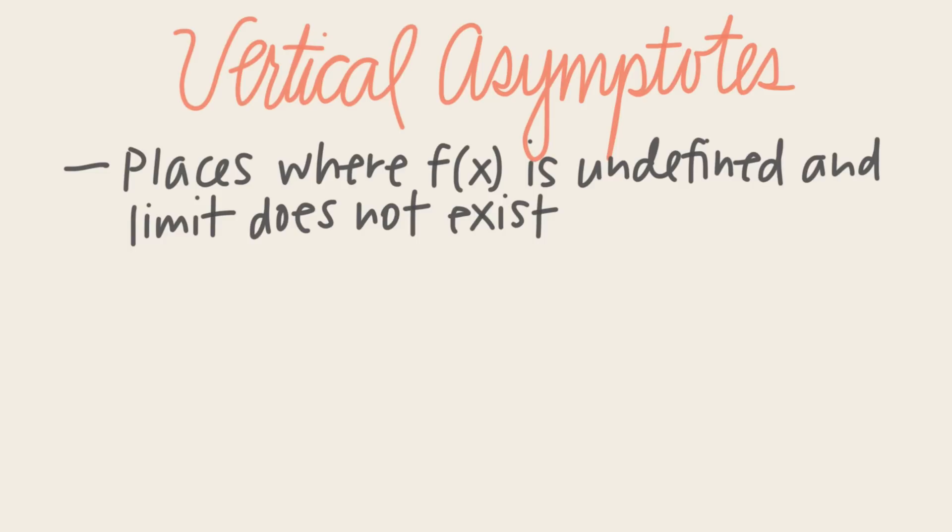To review, vertical asymptotes are places on the graph of a function, where the function is not defined, and where the limit, as x approaches the asymptote, does not exist. We also know that vertical asymptotes exist in both rational and logarithmic functions, and we know how to find them in both.